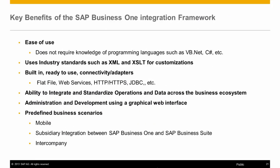These are just a few of the areas used while modifying or building integration scenarios using the SAP Business One Integration Framework. The key benefits of B1IF are that it does not require knowledge of programming languages such as VB.NET, C Sharp, or Java. It uses industry standards such as XML and XSLT for customizations, with built-in ready-to-use connectivity types such as flat file, web services, and HTTP. Additionally, it offers administration and development using a graphical web interface, and predefined out-of-the-box business scenarios such as mobile, subsidiary integration between SAP Business One and SAP Business Suite, and intercompany transaction processing.